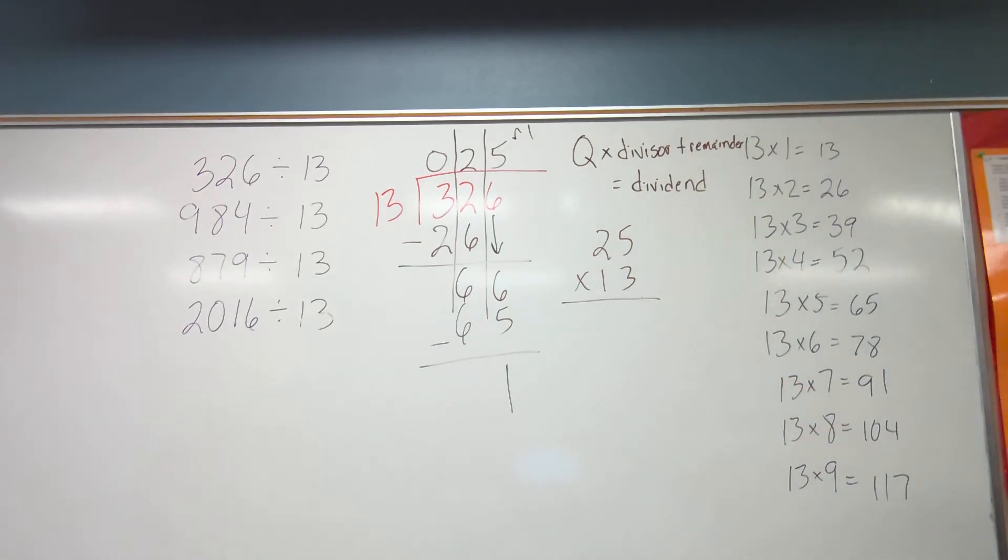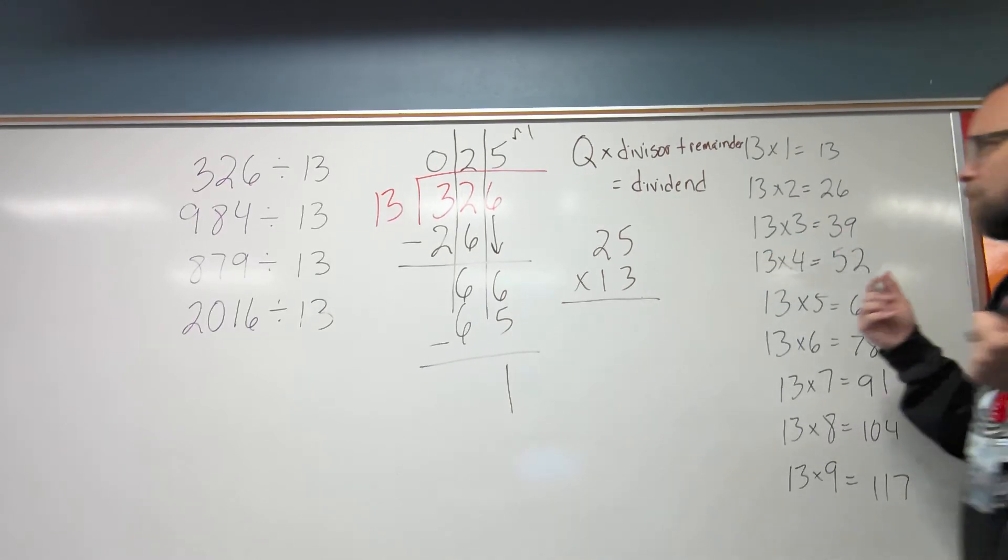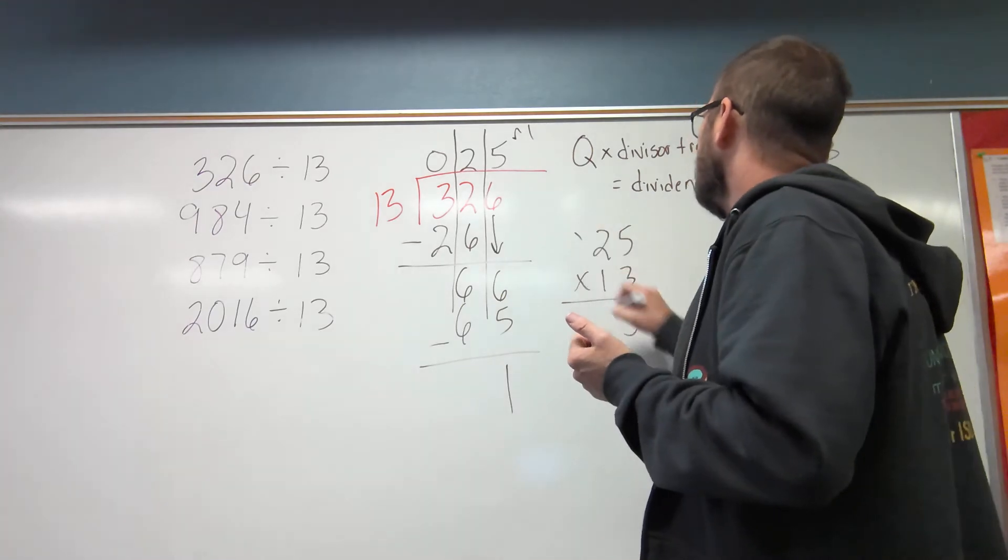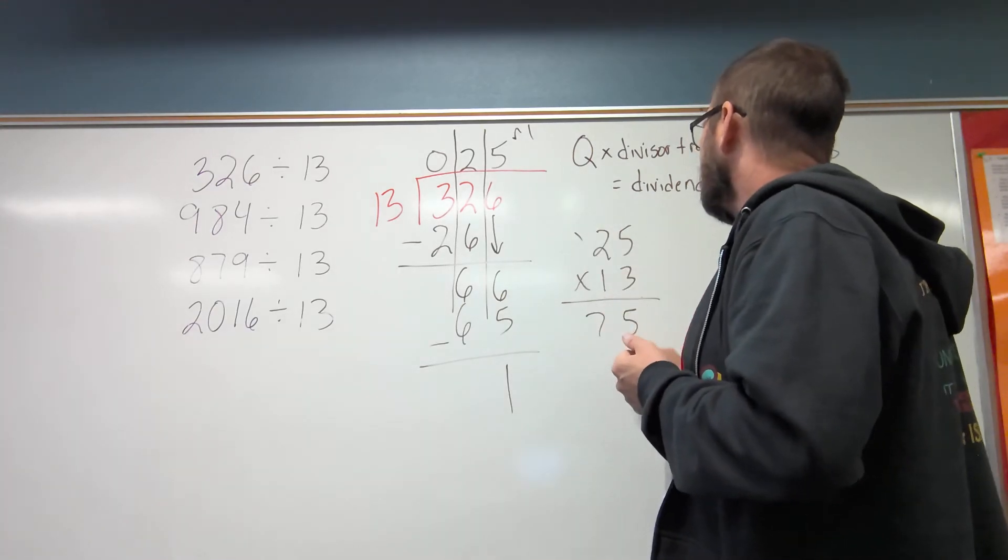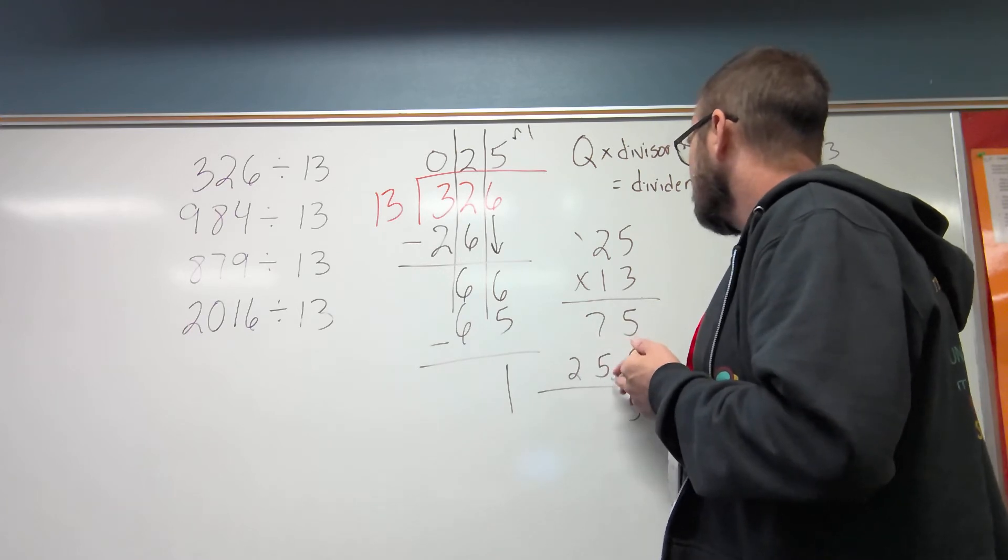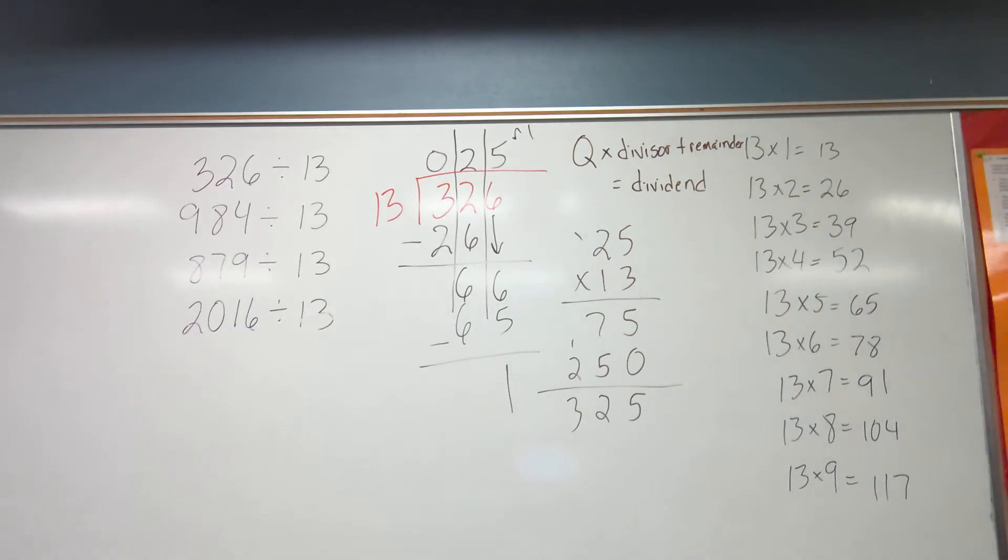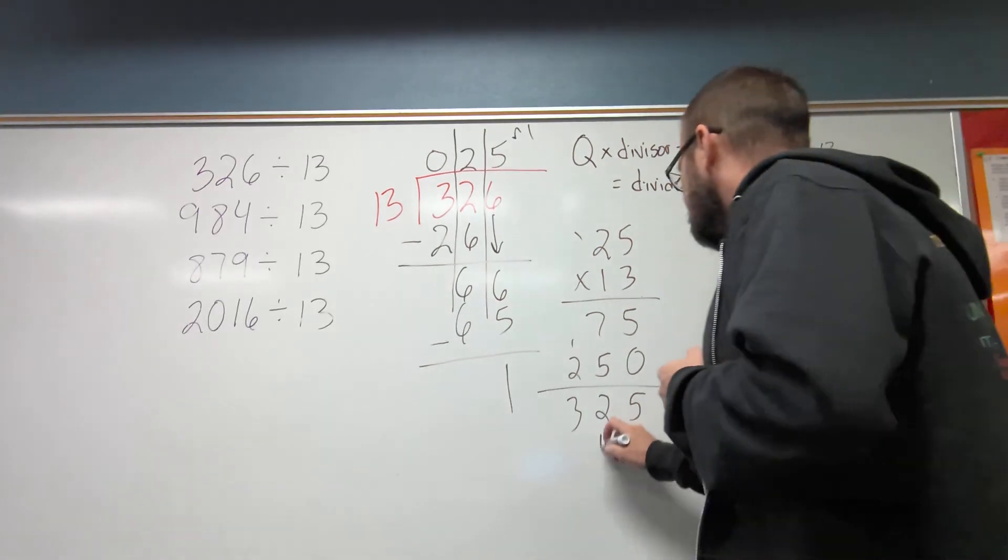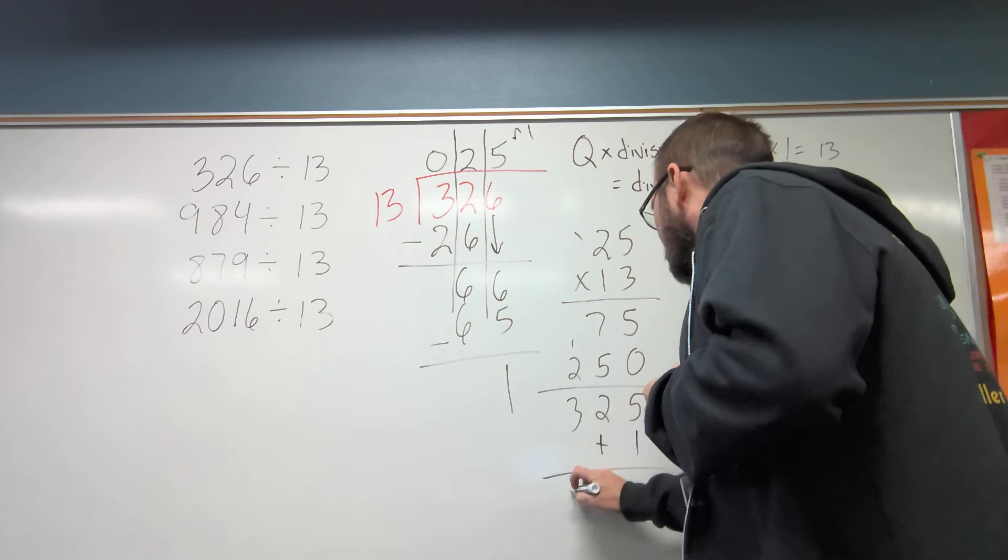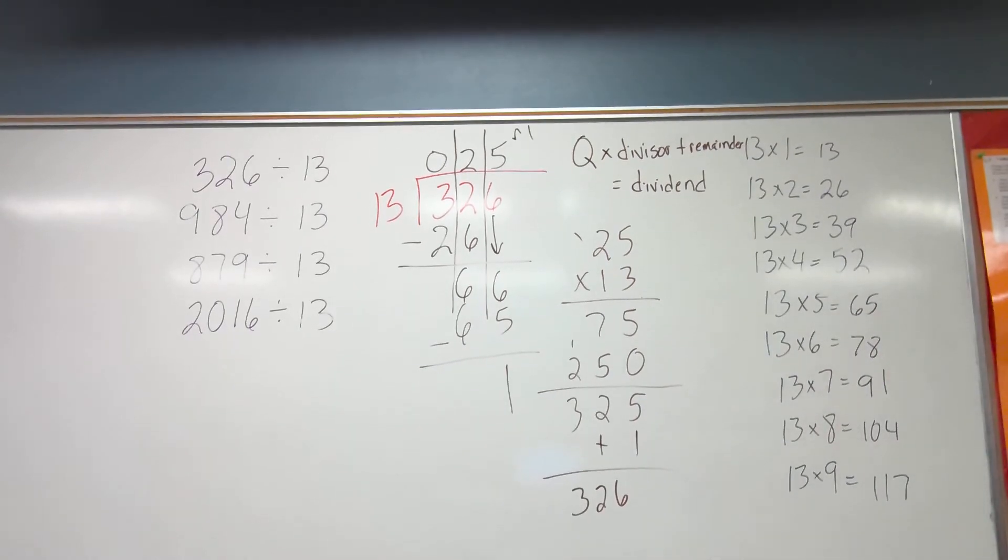So now I have 25 times 13. And I can easily do this. Because I could break it up. 25 times 3 plus 25 times 10. That's 75, plus 250. 325. But I have to add my remainder. It makes it 326. So I know my answer to this is 25, remainder 1.